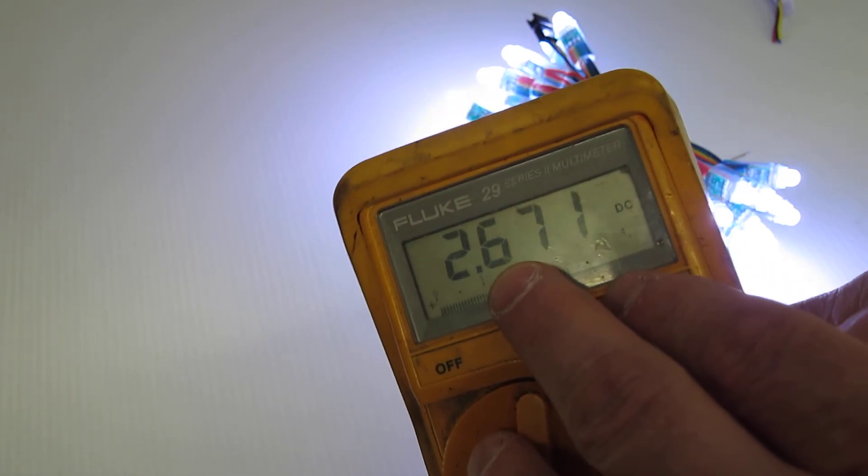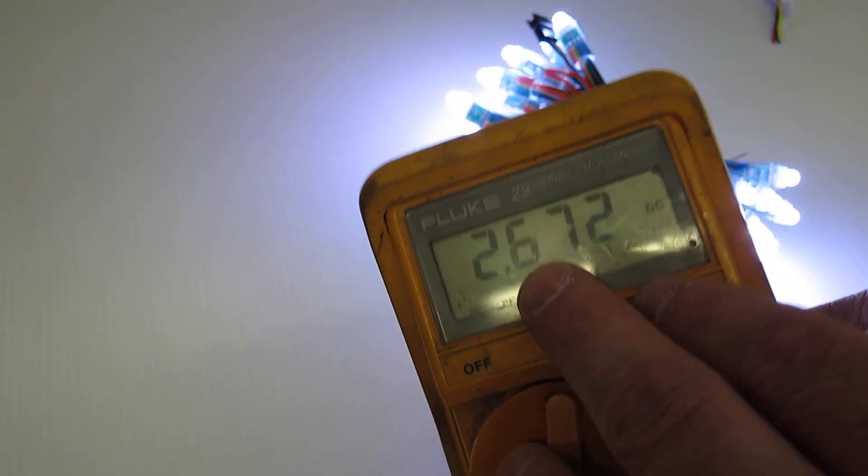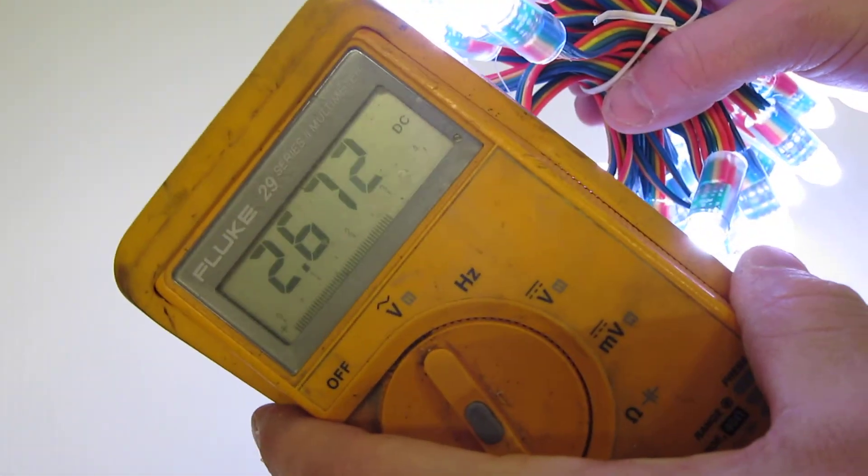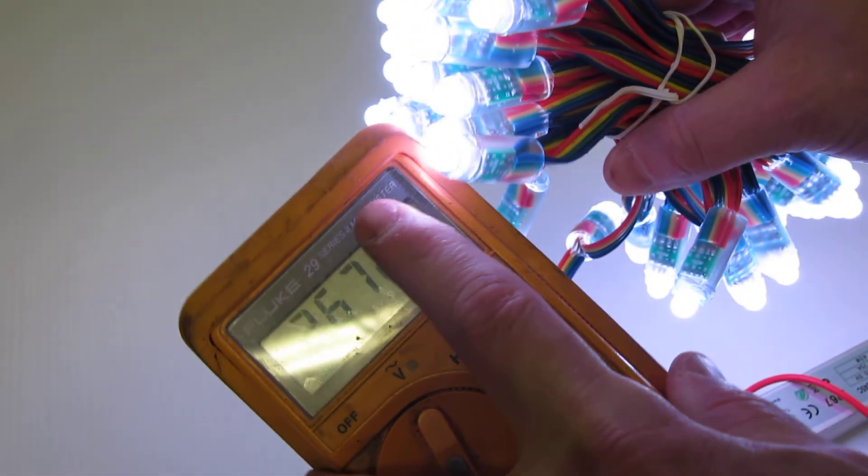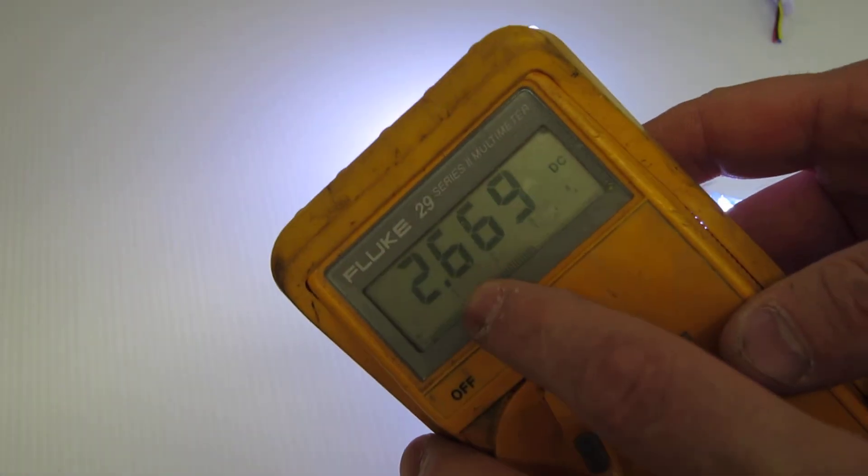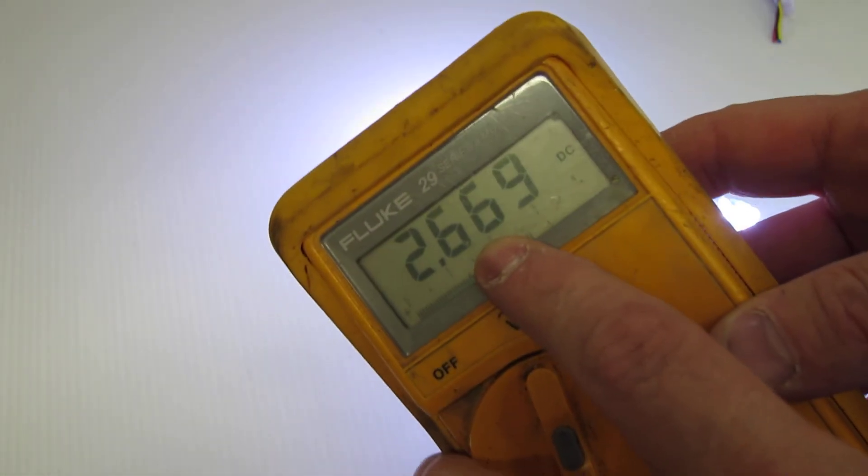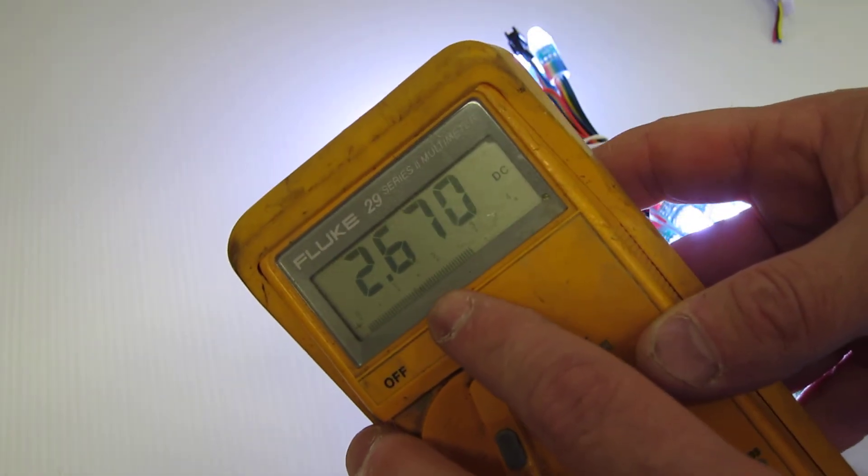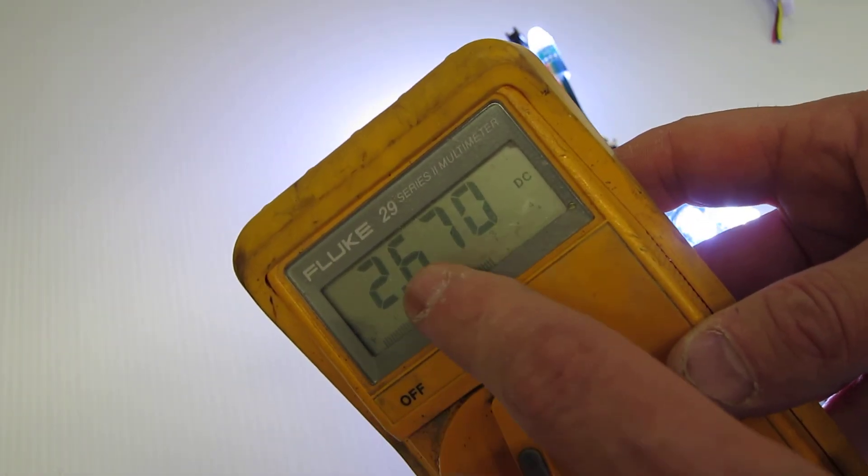You're going to take this number and divide it by the number of items here. If you're trying to determine the actual consumption per item, or per node in this case, take this, divide that by 50, and you'll end up with the appropriate amount of current consumption at white output, which is all of the colors, per item.